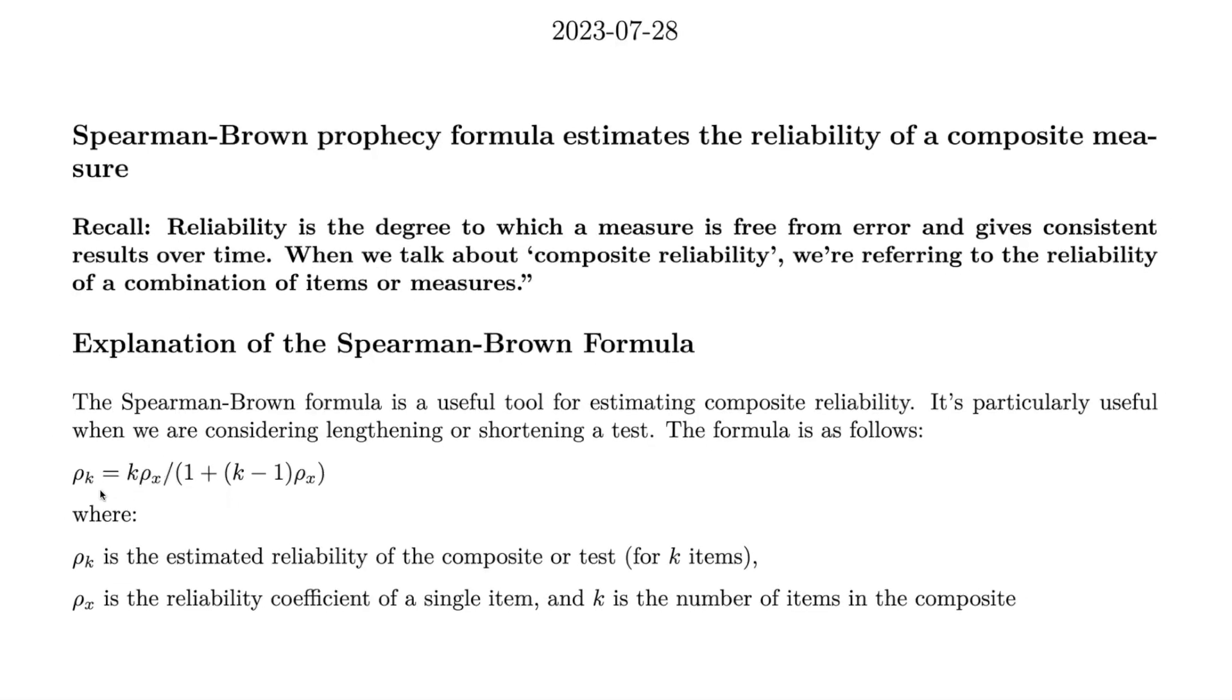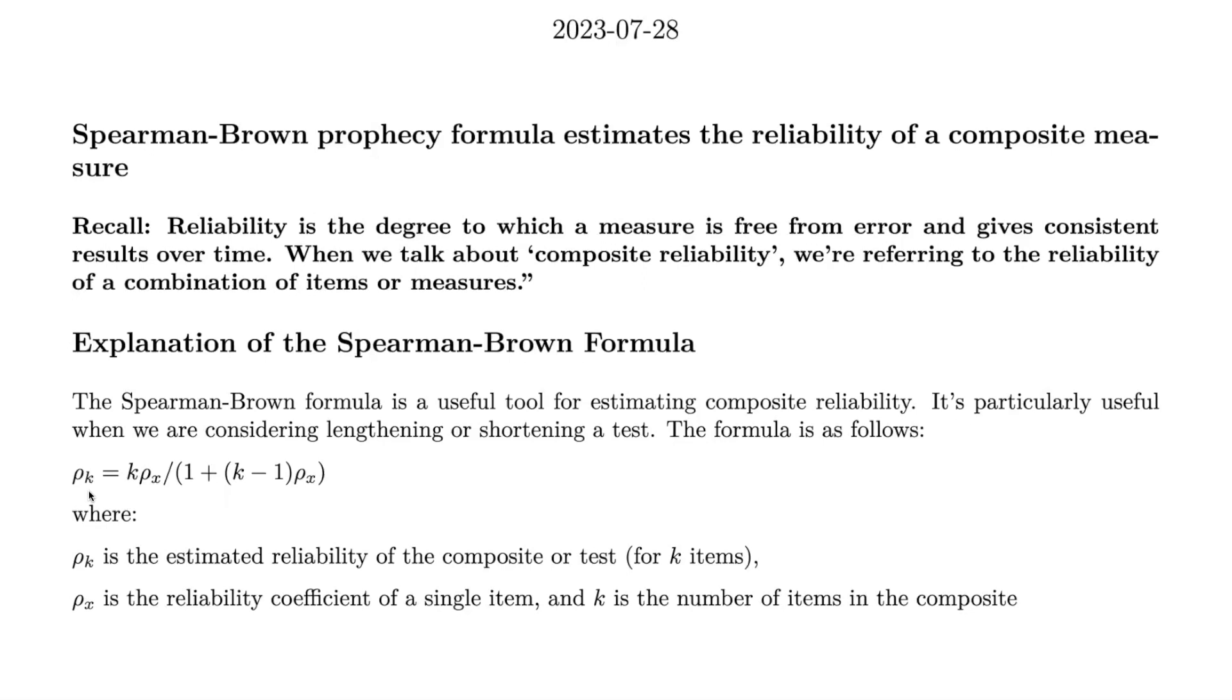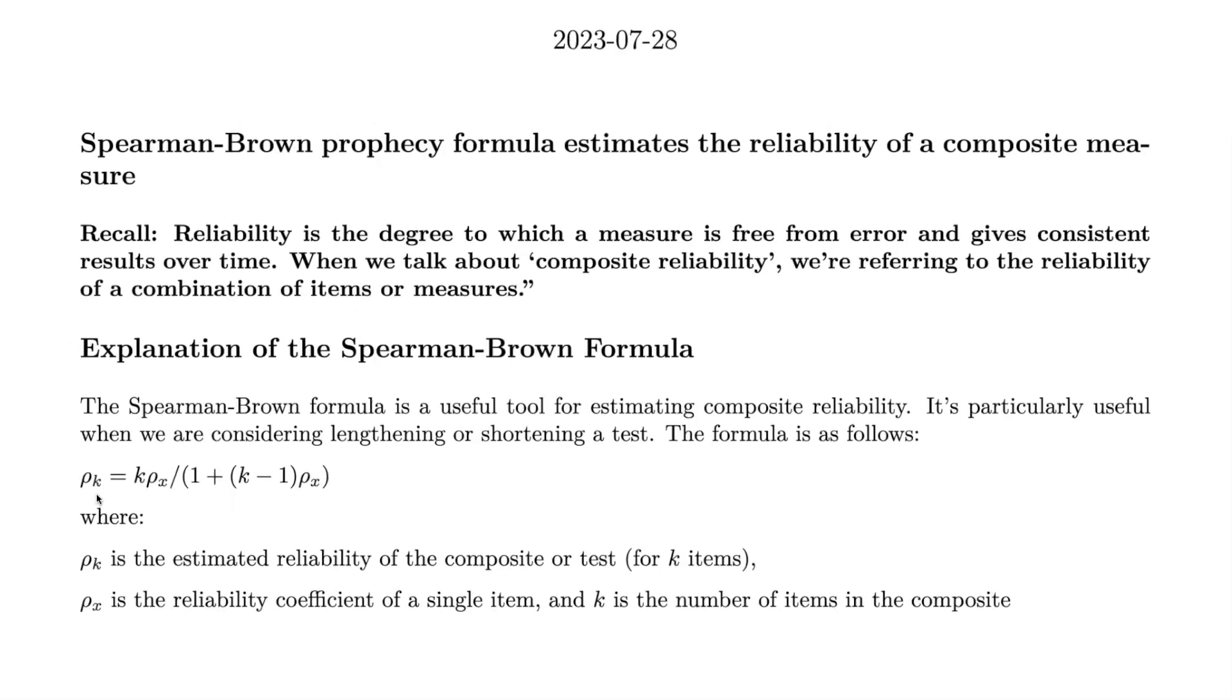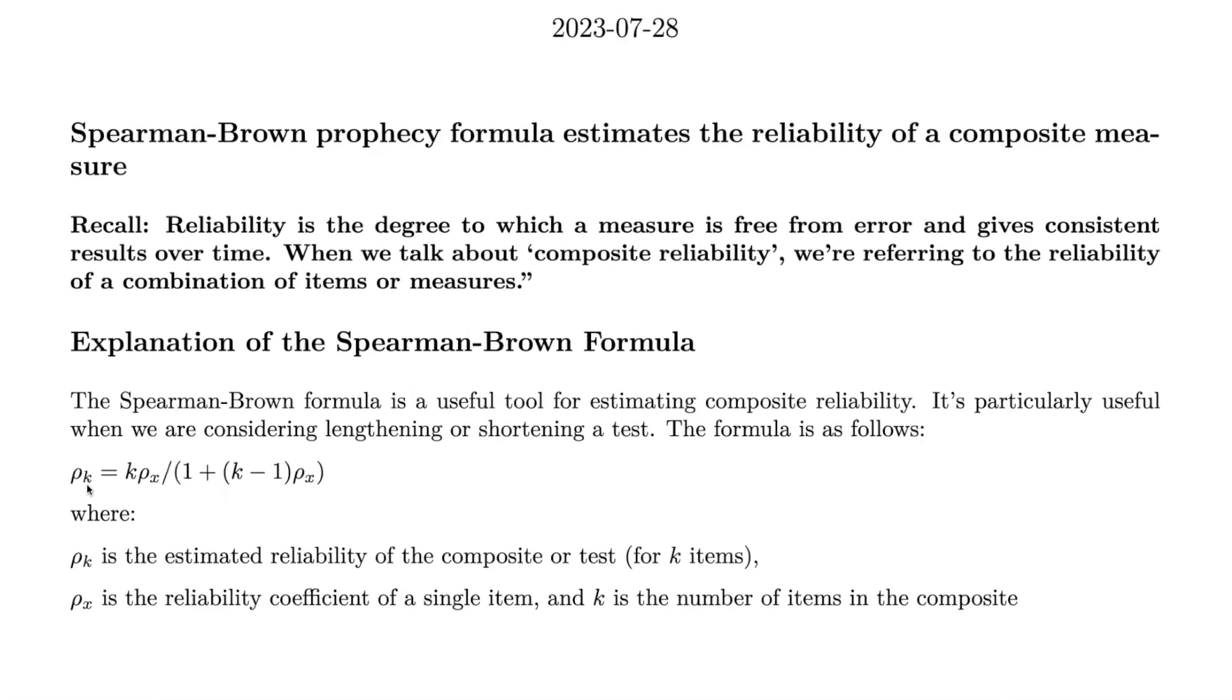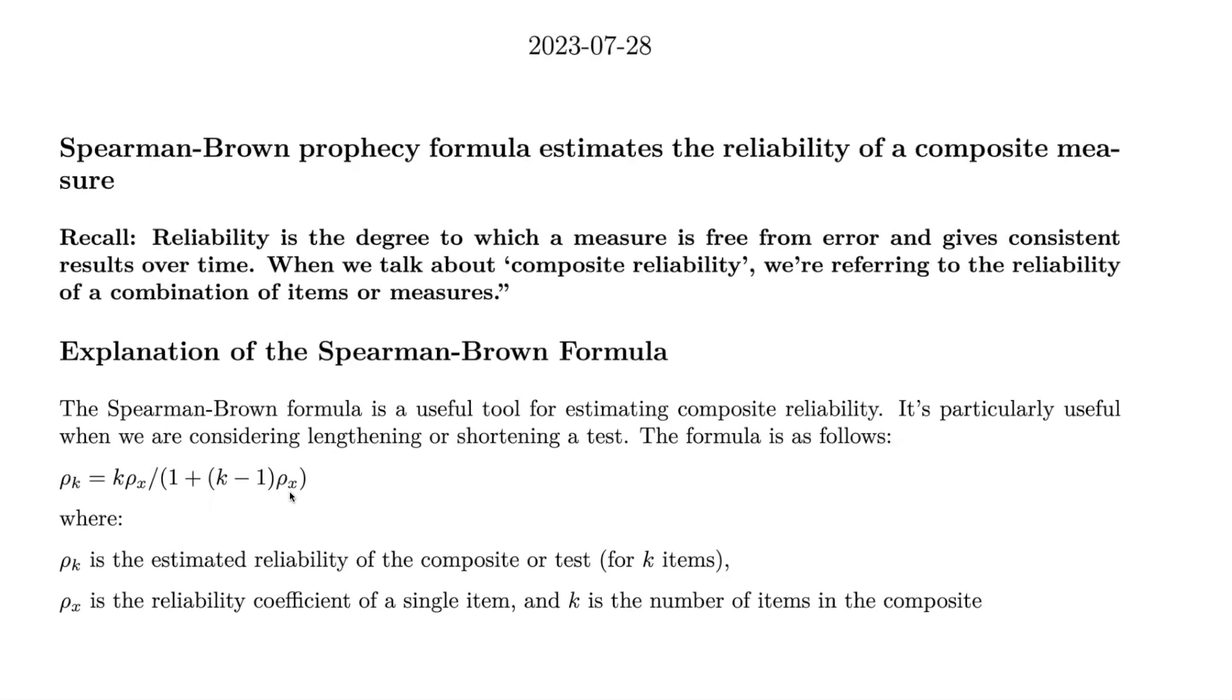Here, ρₖ represents the estimated reliability of our composite or our test, which comprises k items. ρₓ denotes the reliability coefficient of a single item, and k is the total number of items in the composite.